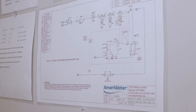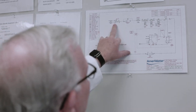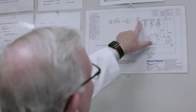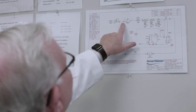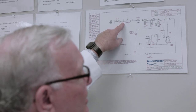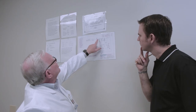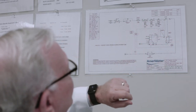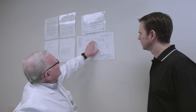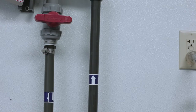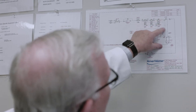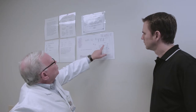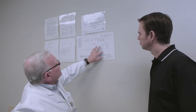We start here with the blend valve; the system goes to the booster pump, then the particle filter and sediment filter. On this drawing you can see valves with V numbers — in the actual system, those valves have tags with those V numbers. Sample ports have SP numbers, gauges have PG numbers. Everything on this drawing is an actual component. The piping has tags showing the direction of flow. Green is incoming tap water, blue is processed RO water, and red is wastewater.